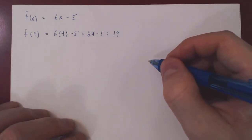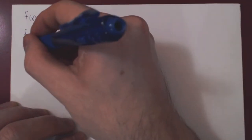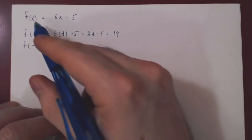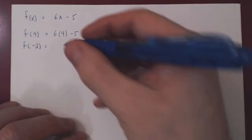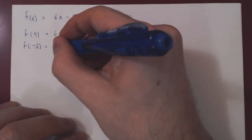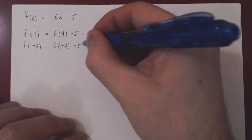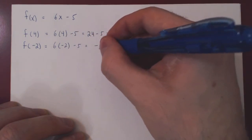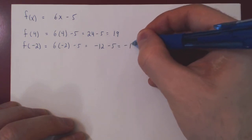That's f of 4. We could calculate f of negative 2. Now we are replacing x by the value negative 2. So we'll get 6 times negative 2, minus 5, which gives us negative 12 minus 5, which gives us negative 17.